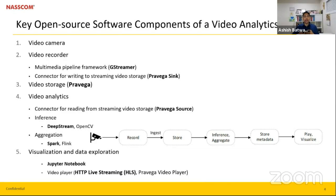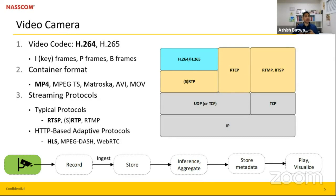For the AI inference engine and analytic software: to inference, aggregate, and transform video data. And fifth, the software to visualize and explore video data and a player that can play video streams. Video camera has three main components from a software point of view: the video codec, which stands for compression and decompression. The most widely used codec is H.264. There are three important frame types: I-frames, which are keyframes — least compressible and self-sufficient. P-frames, which are predicted frames — more compressible and can use data from previous frames. B-frames, which are bi-directional frames — highest data compression using both previous and forward frames, but most compute-intensive.